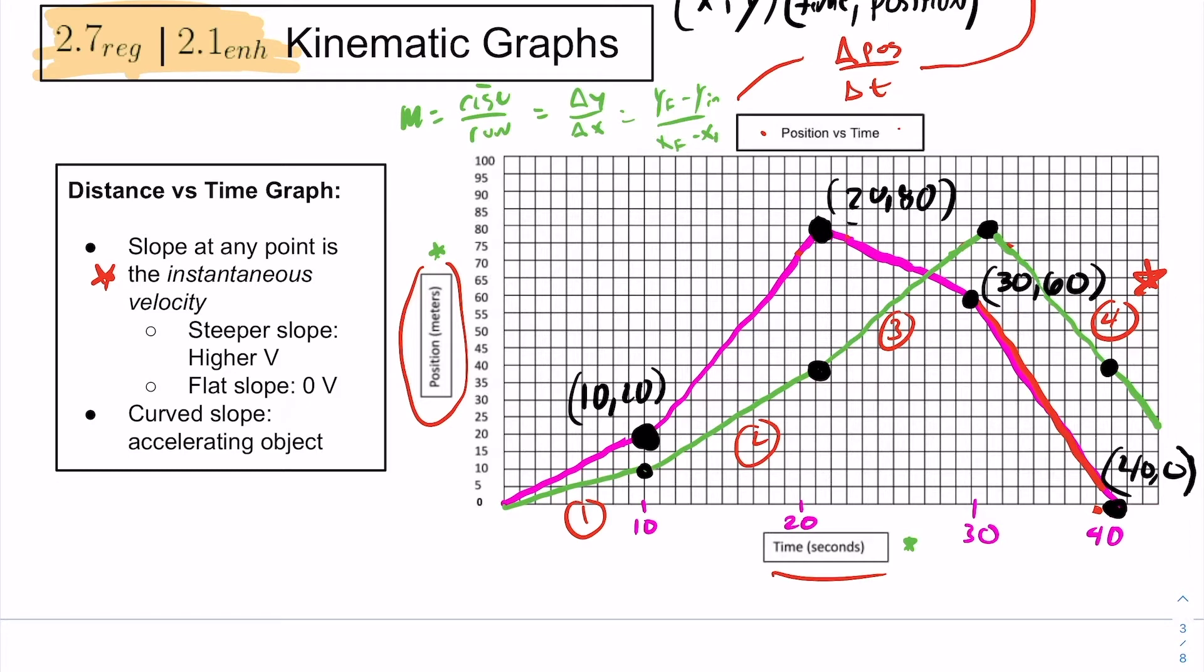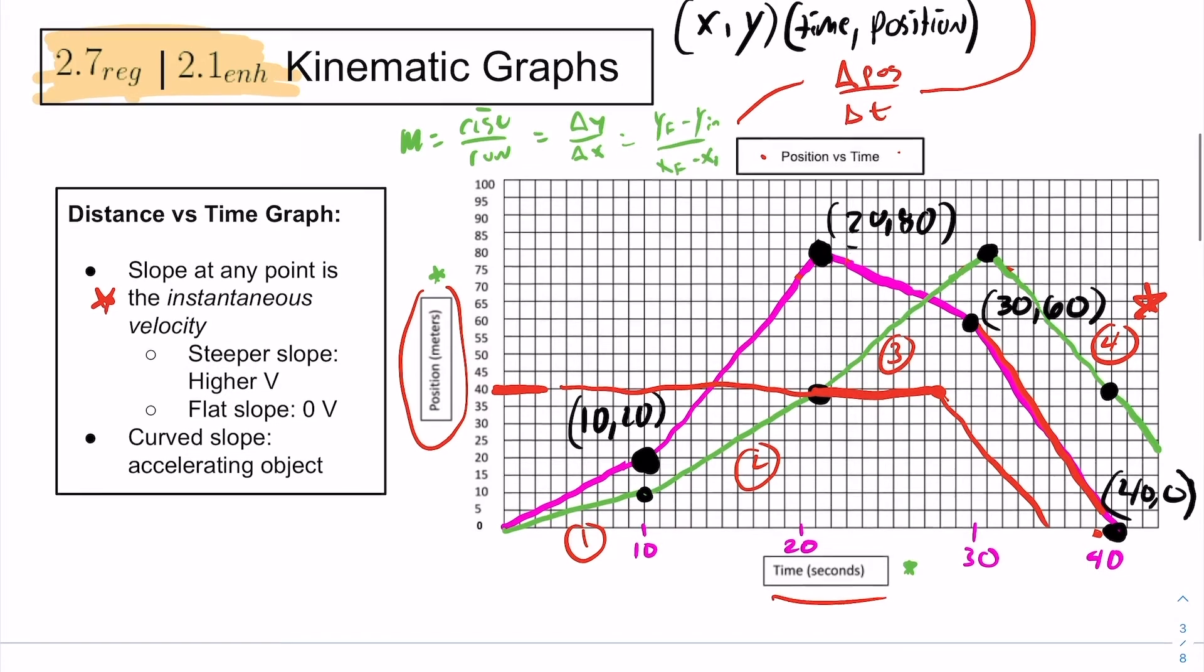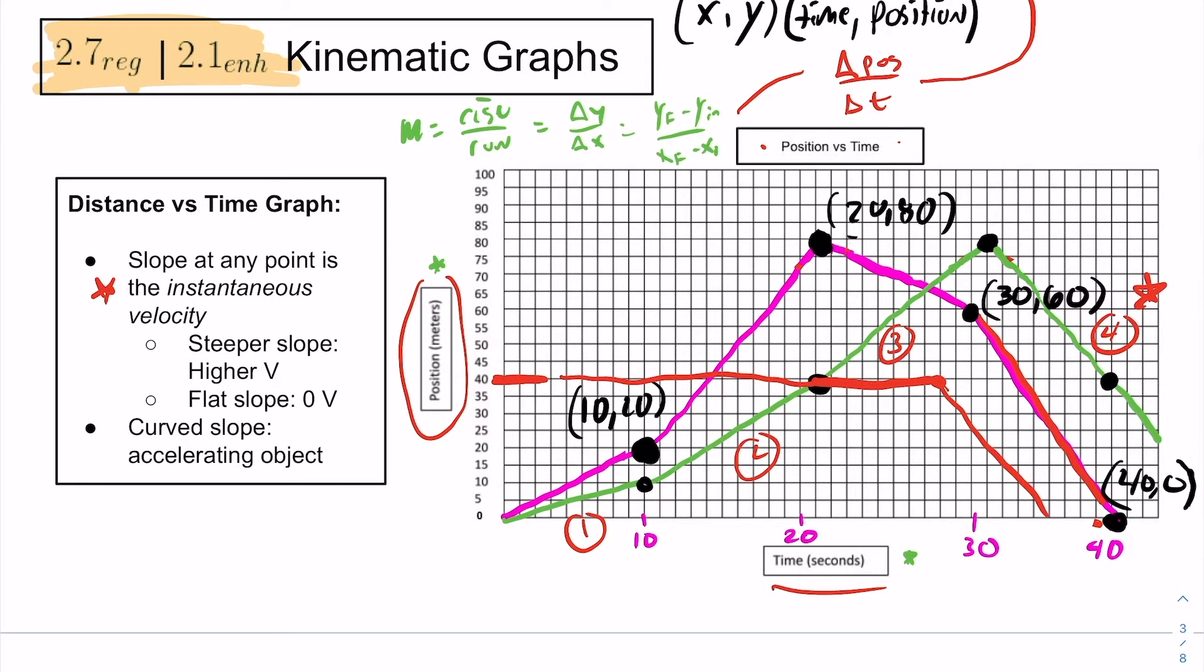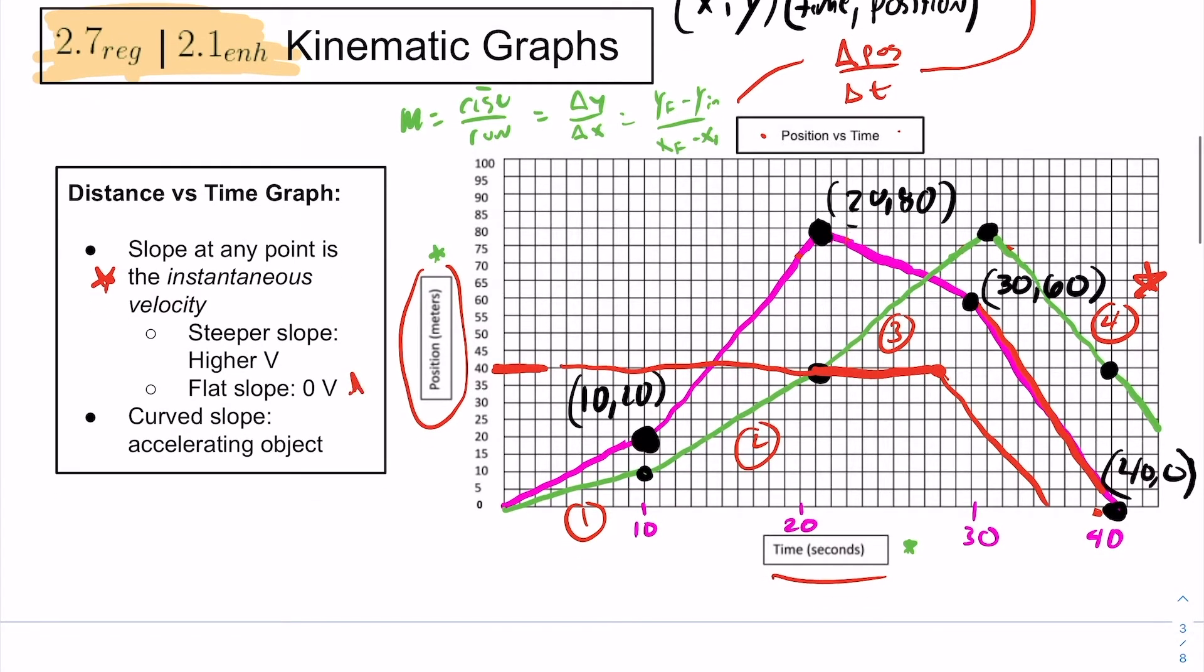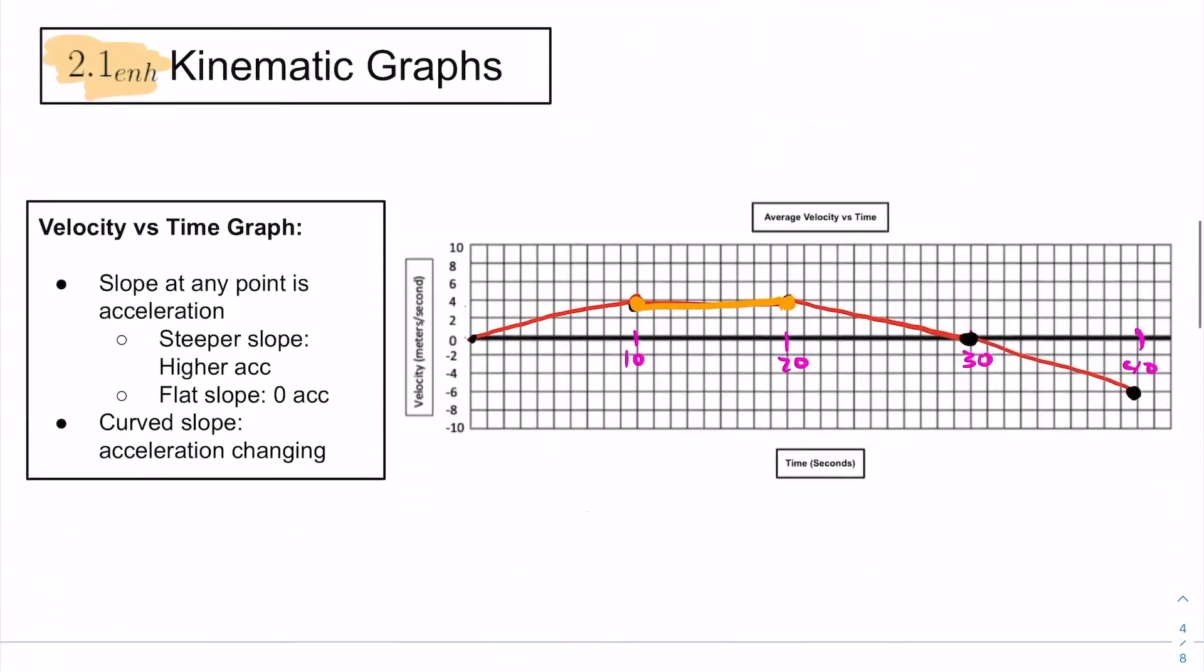This would be where a person is running the fastest. Steepest slope means faster velocity. If we were to have a flat line for our position versus time graph, that would mean position's not changing. They're staying at 40. Our constant position, that would be no velocity.